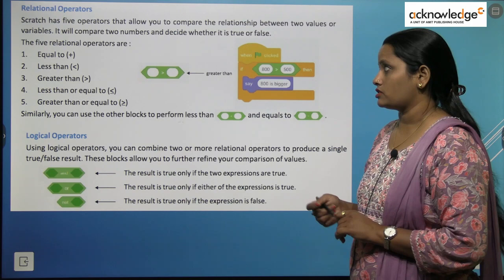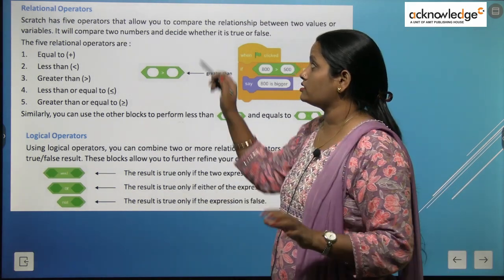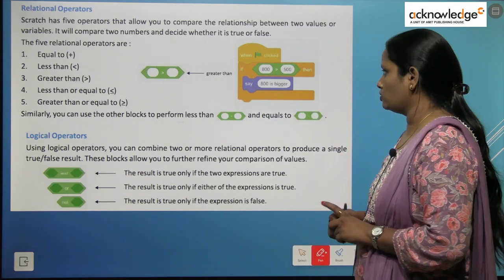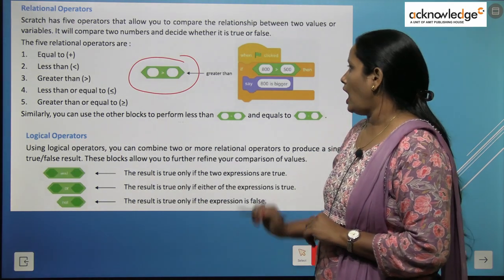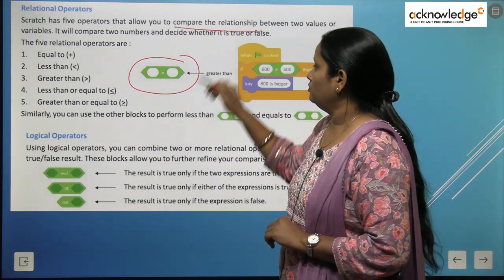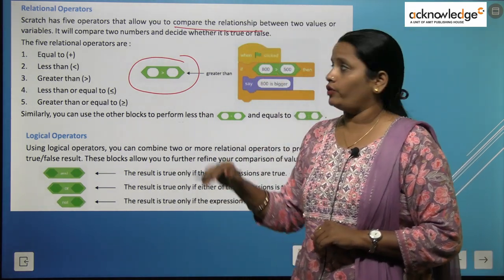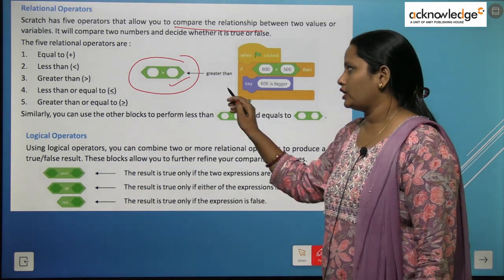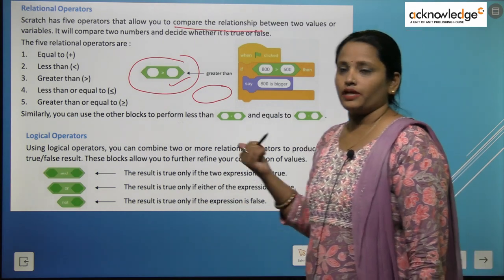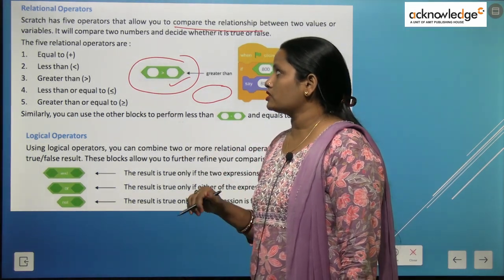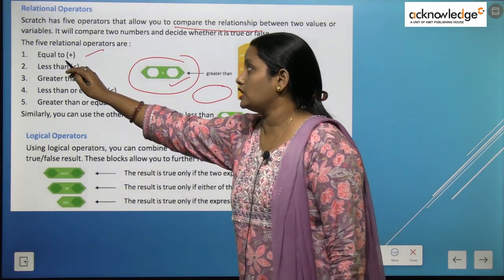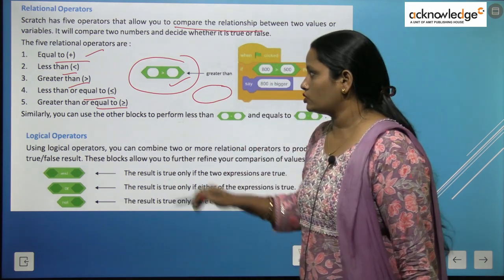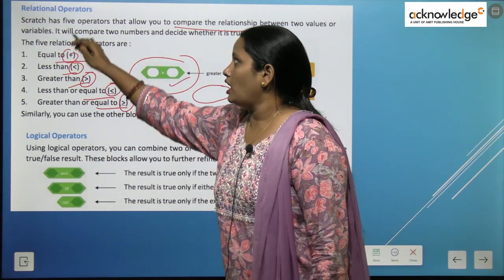Relational operators: Scratch has 5 operators that allow you to compare the relation between two values or variables. The hexagon-shaped block is used to compare between two values or variables. It will compare two numbers and decide whether the result is true or false. The 5 relational operators are: equal to, less than, greater than, less than or equal to, and greater than or equal to. We can see these symbols in our relational operator blocks.